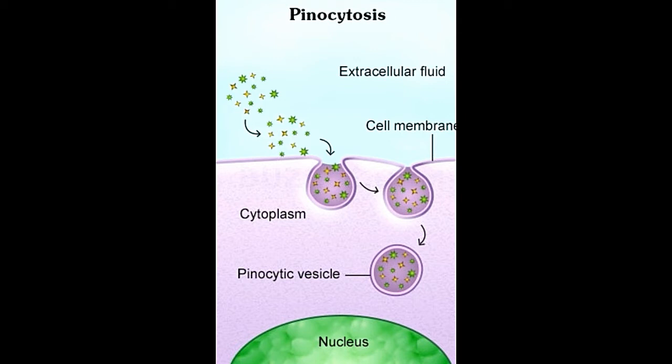Mechanism of internalization — In phagocytosis, there is formation of feet-like processes called pseudopodia. These pseudopodia are extended around the molecule to be internalized and taken in by the cell; this process is called engulfment. In pinocytosis, there is enfolding of the cell membrane along with the extracellular fluid and the solute particles dissolved in it; this process is called invagination.